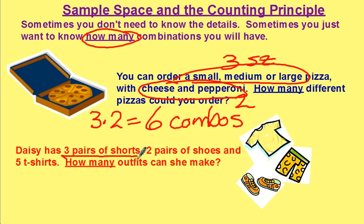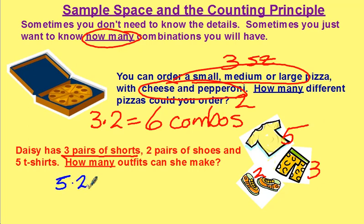What if you have three pairs of shorts, two pairs of shoes, and five t-shirts? How many outfits could you make? Five times two times three equals 30 outfits.